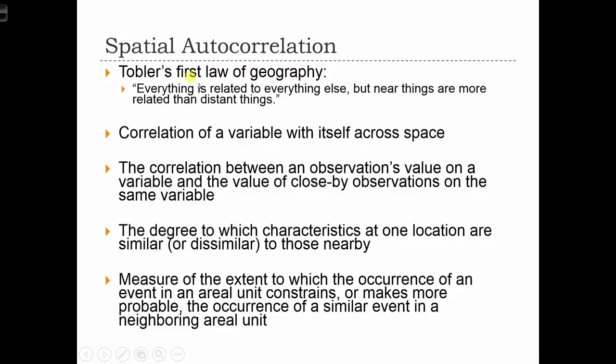One way to think of spatial autocorrelation is that it's the correlation of a variable with itself over space, or the correlation between an observation's value on a variable and the value of close-by observations on the same variable.